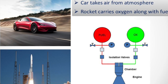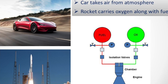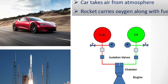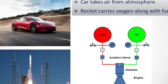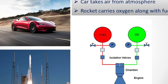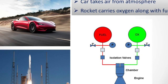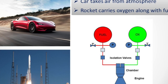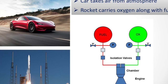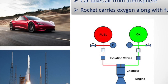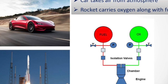Coming to the rocket, there is one small difference. The rocket is carrying both fuel and oxidizer inside it for burning. Because the rocket travels at a distance of 400 to 500 km, and after 100 km there is no atmosphere. So the rocket must carry oxidizer along with it. What else is needed? Like the spark plug in a car, here we are using an ignitor.